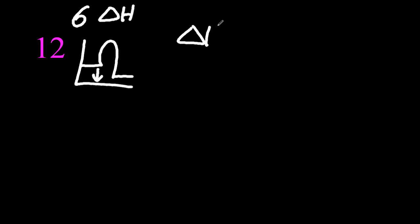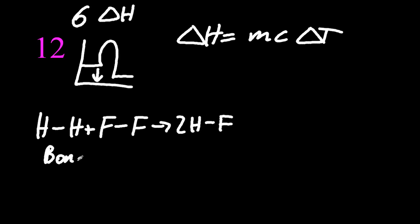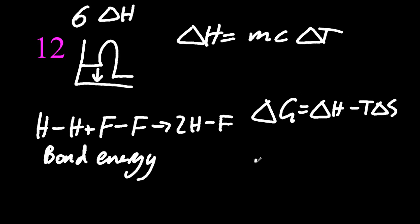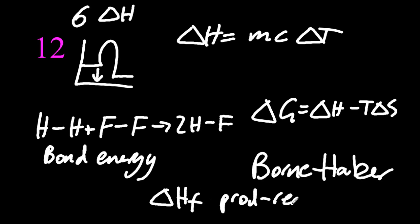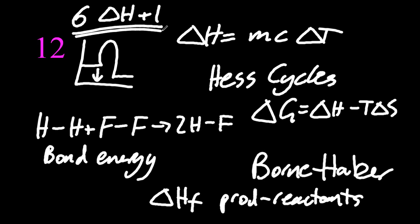Six ways to measure delta H. Energy diagram. Oh, that delta H is a bit too long. MC delta T, you can use bond energies. That's the third way. The fourth way is using Gibbs free energy equation. The fifth way is Born Haber. The sixth way is using heat of formations, products minus reactants. Oh, and Hess cycles. So that's seven different ways to measure delta H.